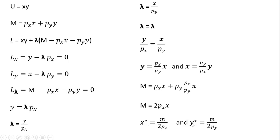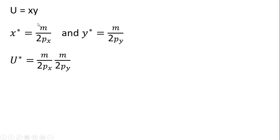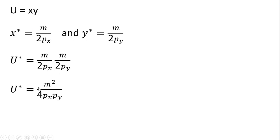With the optimal values of x and y in hand, we go back to our utility function, evaluate it at the optimal values of our choice variables, make the substitution, and simplify. This gives us our indirect utility function.